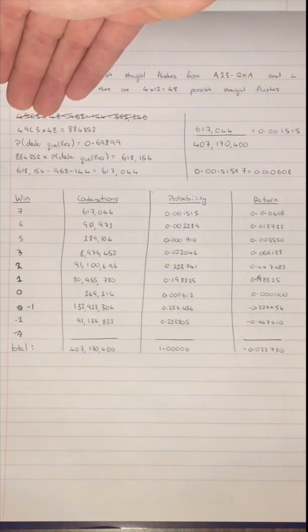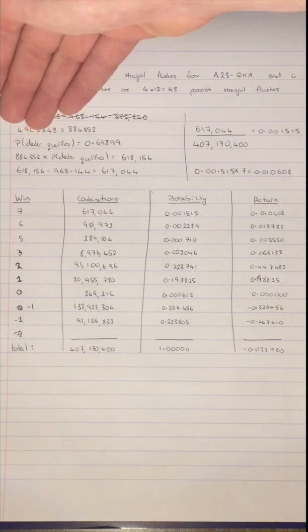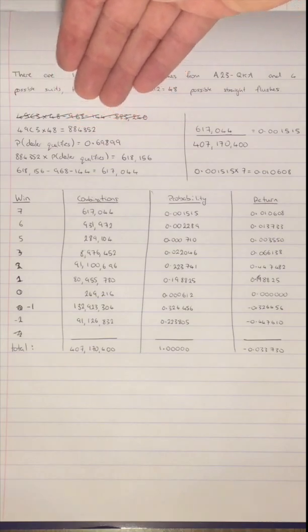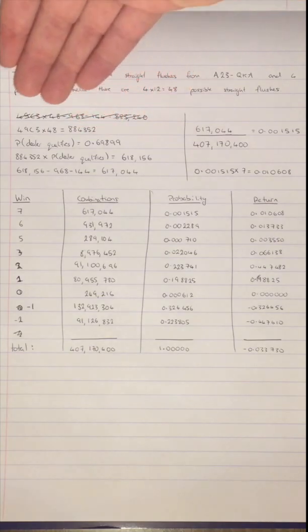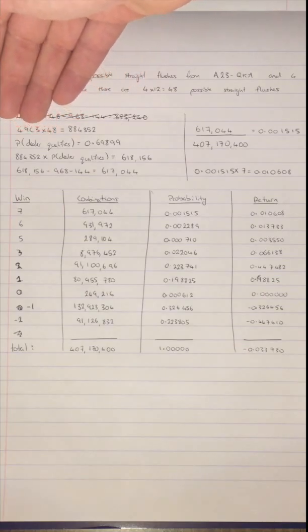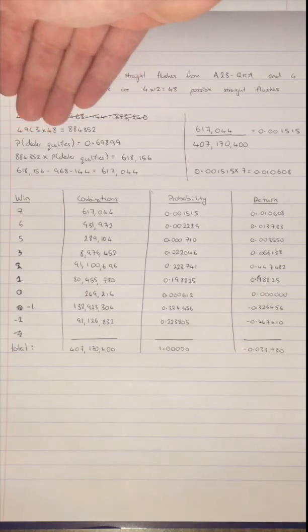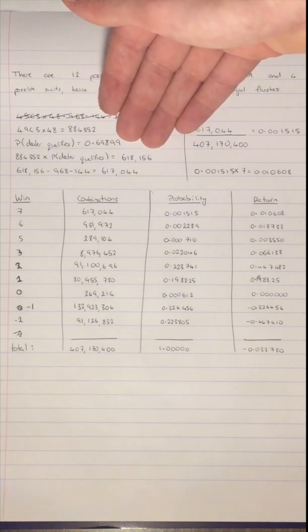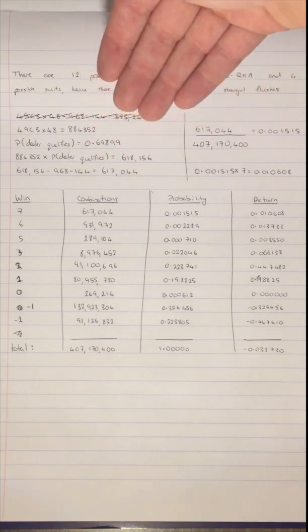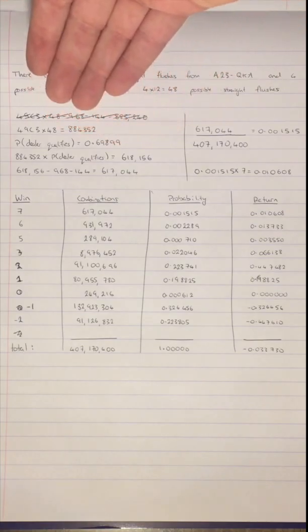The probability that the dealer qualifies, meaning the probability that the dealer gets above a queen, is 0.69899. If we multiply the number of possible hands times by the amount of times the dealer qualifies, then we get 618,156 hands where a player gets a straight flush and the dealer qualifies.